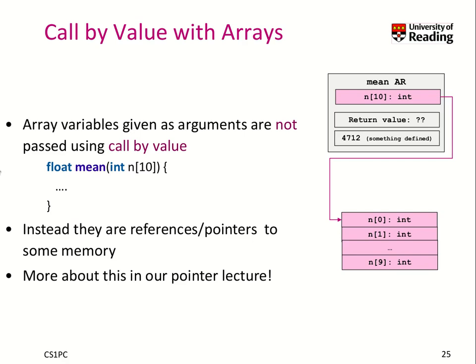Let's talk about how call-by-value works with arrays. Using an array variable such as n, which is an array of 10 integers, as an argument to a function like mean is actually not really passed call-by-value. Instead, what you get is a reference, which is a pointer, to memory.